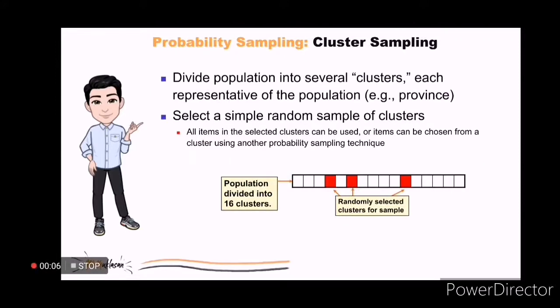In a cluster sampling, we first divide the population into several clusters. Clusters are often naturally occurring designations such as provinces, election districts, city blocks, households, or sales territories. Assuming you have 4 districts in your area, therefore you need to get a random sample from each of these 4 districts. Cluster sampling is often more cost-effective than simple random sampling, particularly if the population is spread over a wide geographic region. However, cluster sampling often requires a larger sample size to produce results as precise as those from simple random sampling or stratified sampling.